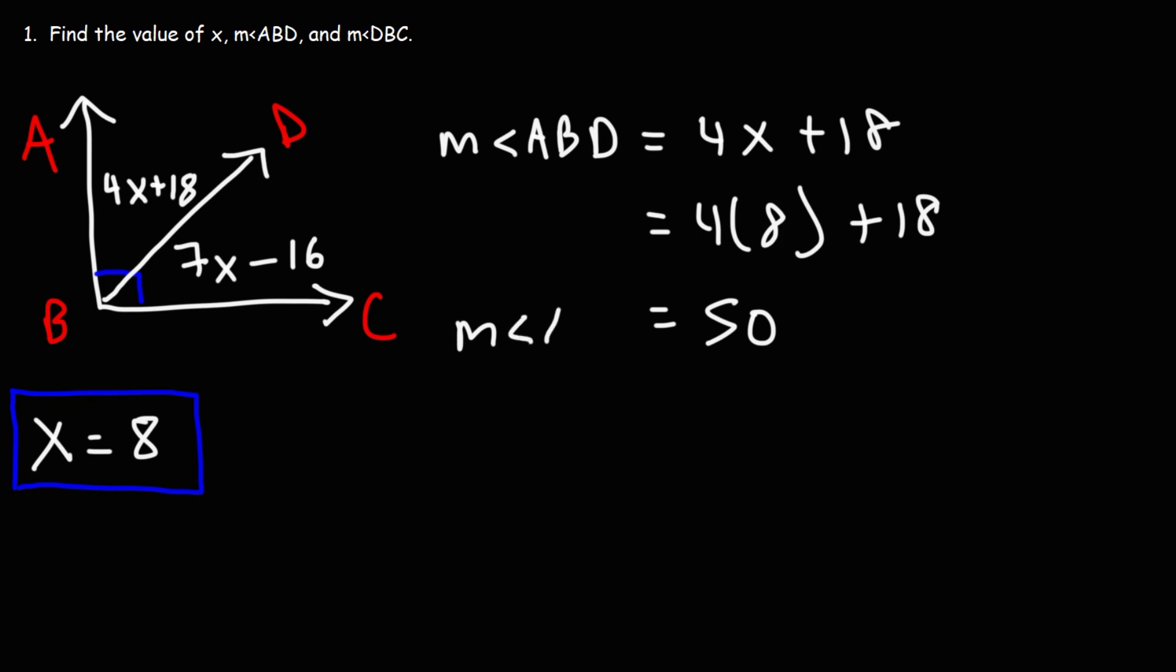4 times 8 is 32 plus 18, that's 50. So angle ABD is 50 degrees. Now let's move on to the other angle. So DBC.